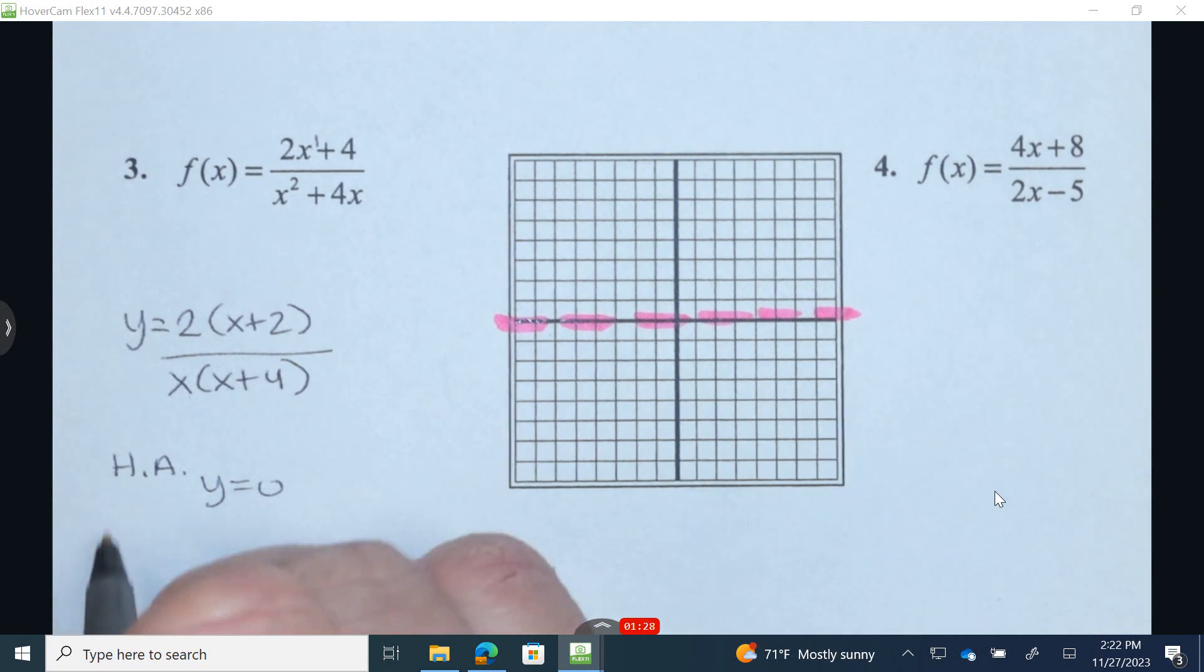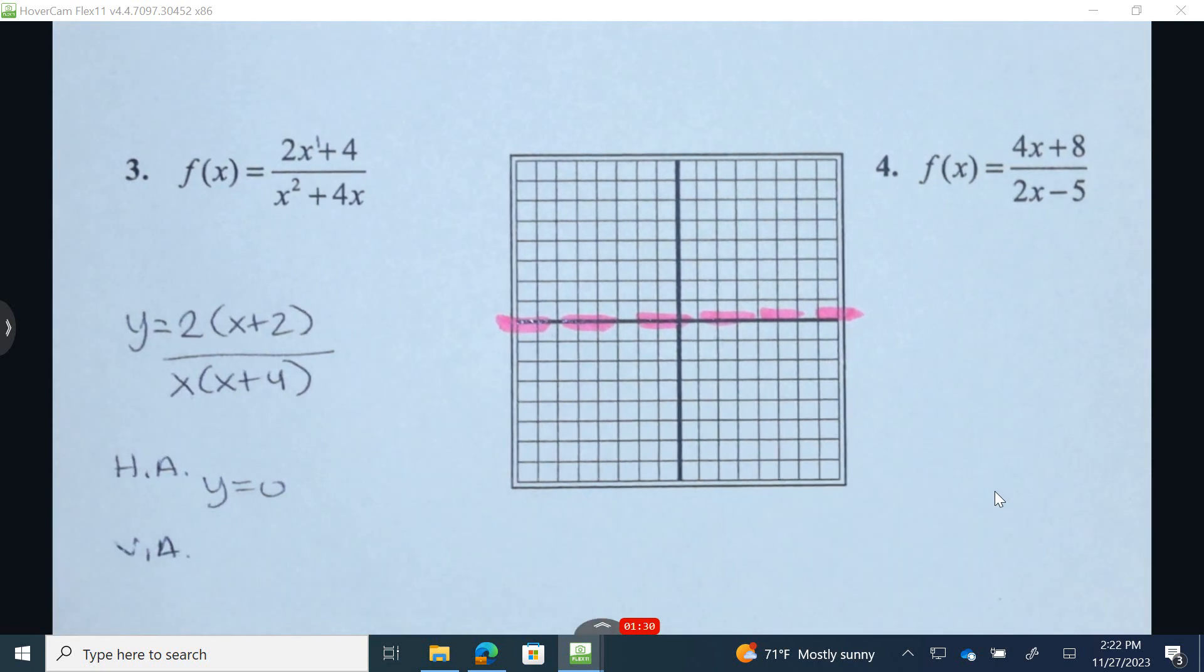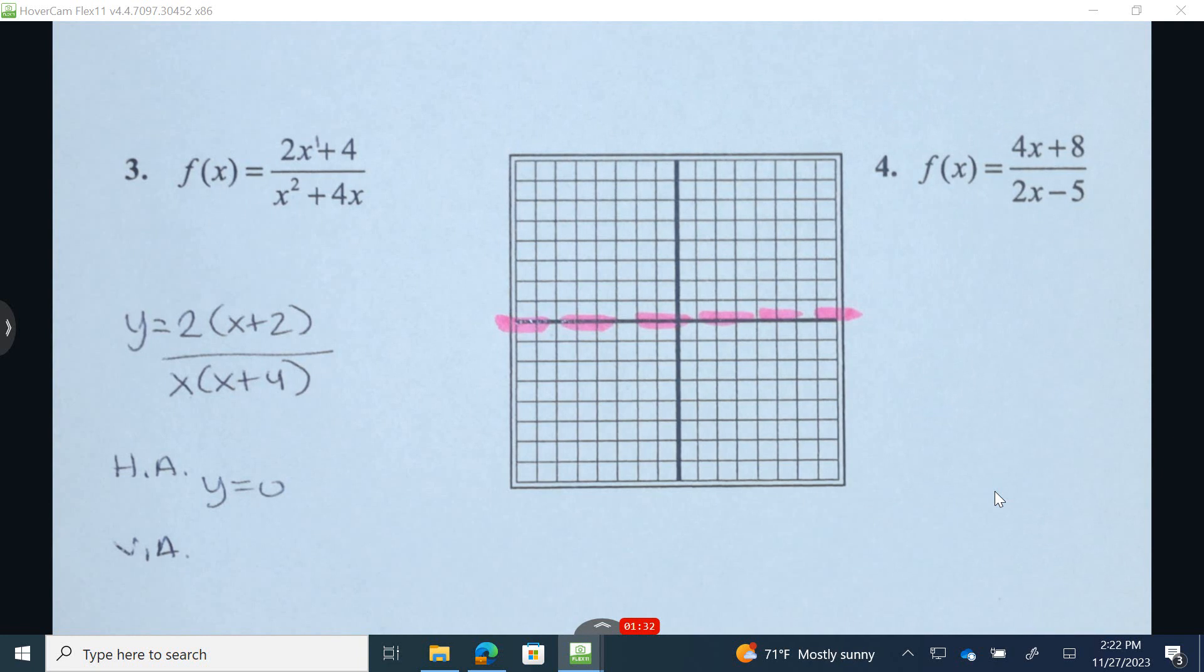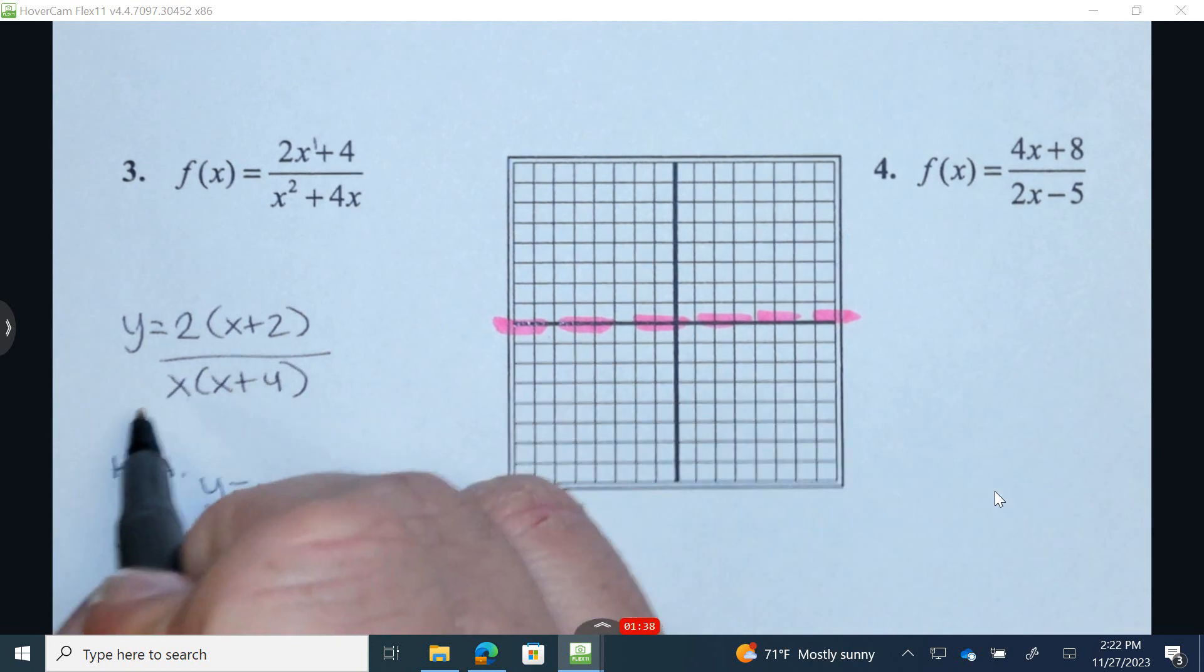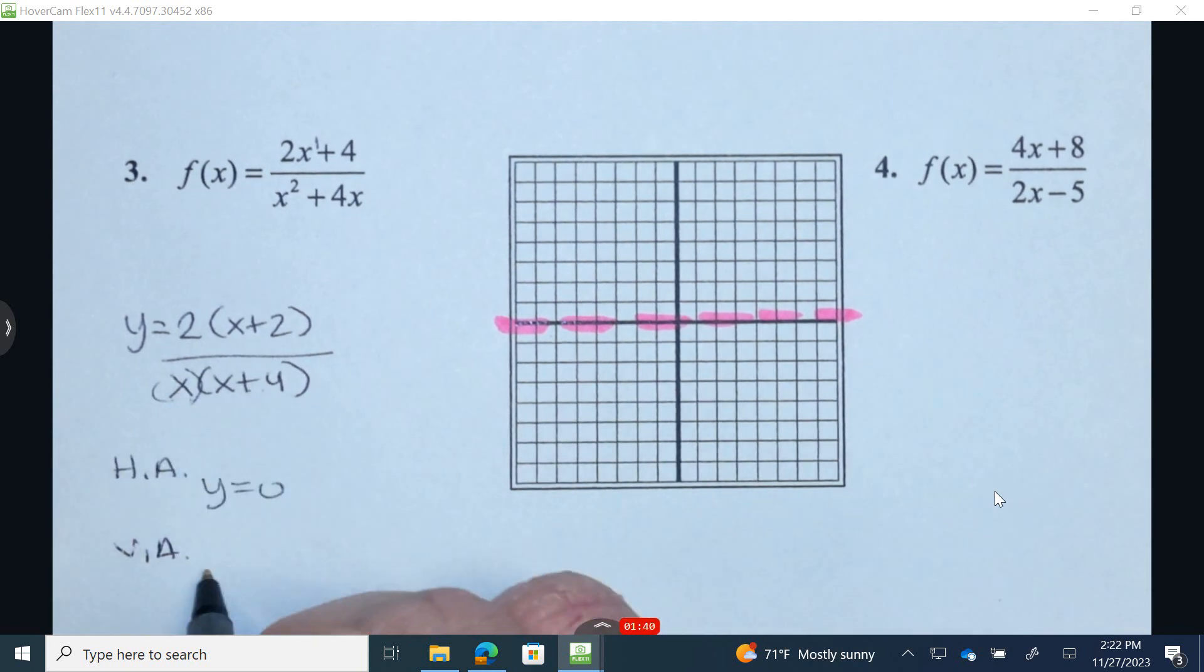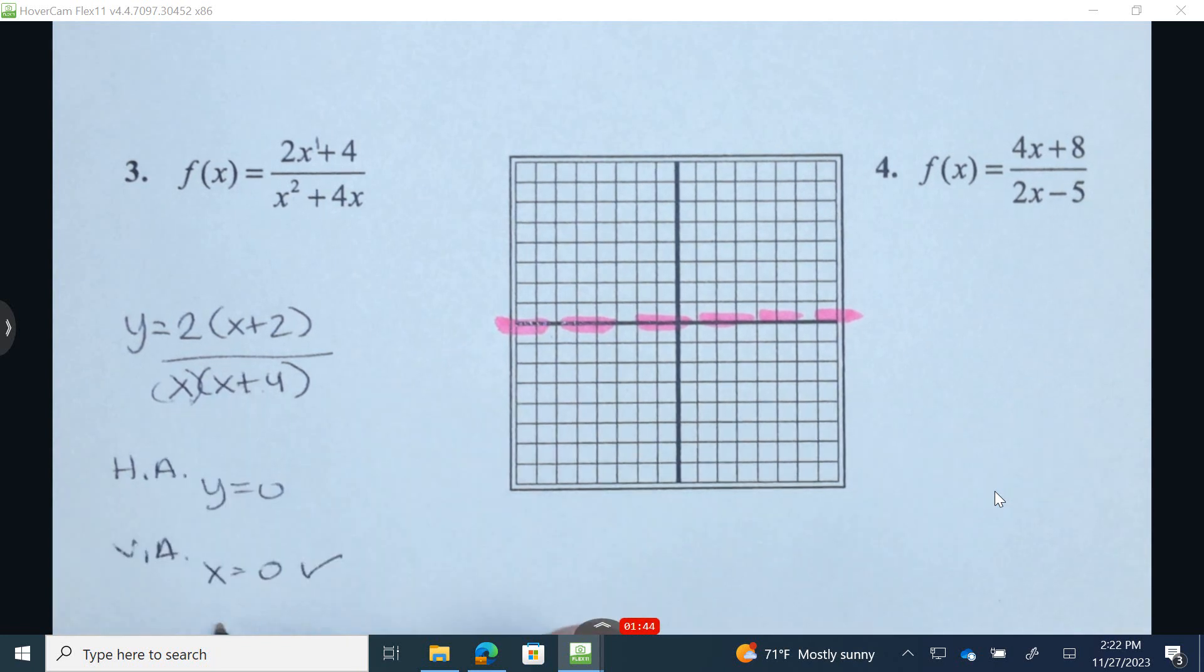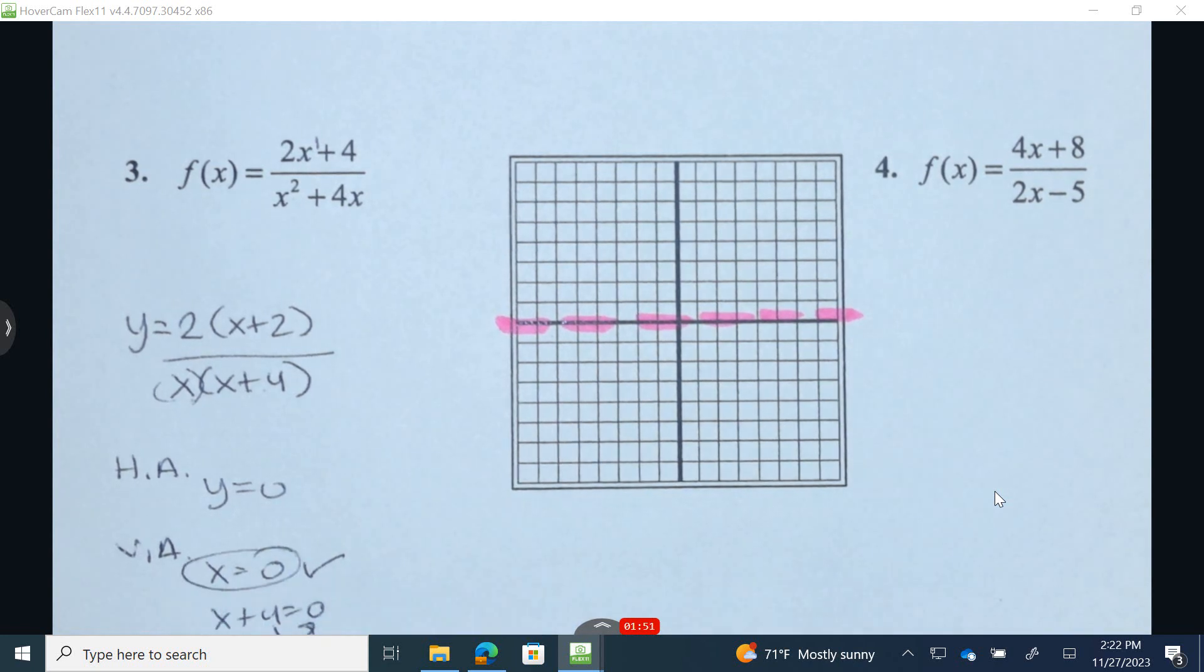Now how do we identify the vertical asymptotes? Vertical asymptotes exist whenever there is a variable in the denominator. So in the denominator here, I'm going to set each one of these quantities equal to 0. So x equals 0, well it's already done. And I'm going to set x plus 4 equal to 0. So I'm going to subtract x to the opposite side. So I have two equations for vertical asymptotes.